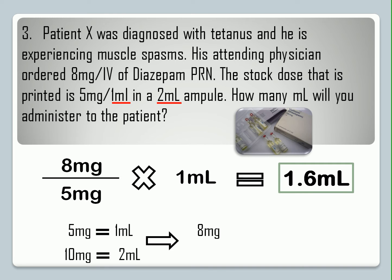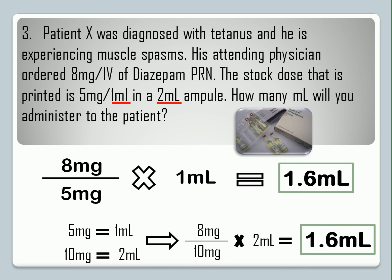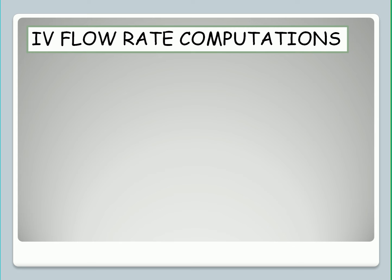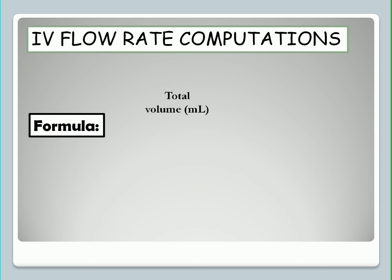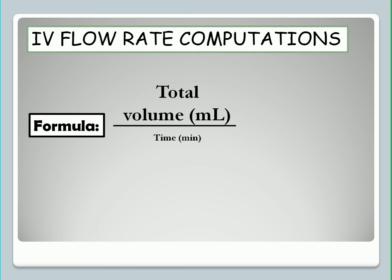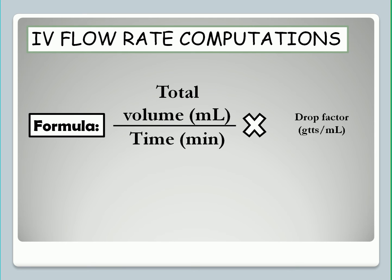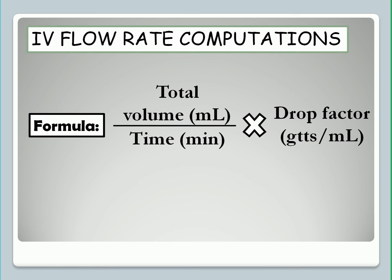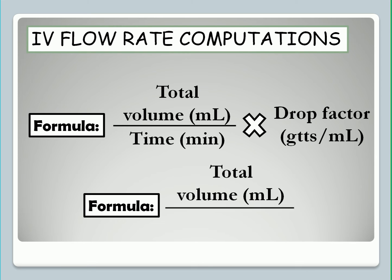You can also use the 2 ml but you need to change 5 mg to 10 mg, and you will still arrive at the same answer of 1.6 ml. This will just complicate things, so it is better to stick with the first solution. Let's now proceed to our last topic: IV flow rate computation. The basic formula is total volume in ml divided by the expected time in minutes, multiplied by the drop factor in drops per ml. Another formula for ml per hour is total volume in ml divided by time in hours.